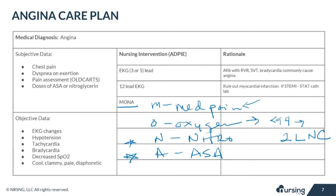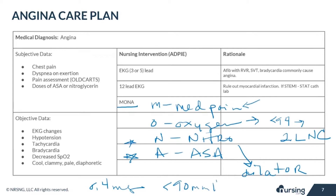Nitroglycerin is the initial medication given along with aspirin. Nitroglycerin works as a dilator to help allow blood flow that might be disrupted. You're going to give 0.4 milligrams sublingual, wait five minutes. If chest pain isn't relieved, administer another dose, no more than three doses. Make sure that the patient's blood pressure is being monitored and hold the dose if the systolic blood pressure is less than 90 mmHg.